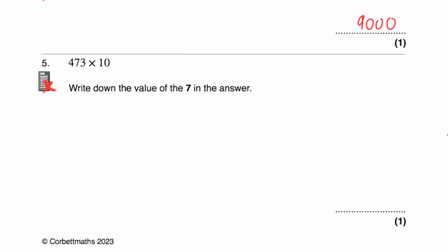Question number 5 says 473 multiplied by 10. Write down the value of the 7 in the answer. So let's work out the answer. Whenever we multiply this number by 10, each of the digits moves one column to the left, so the answer would be 4,730. And the value of the digit 7 — that's in the hundreds column — so the answer would be 700.